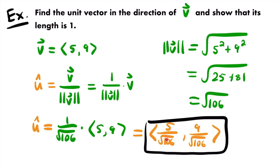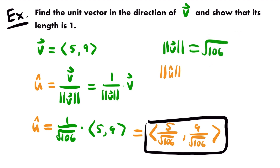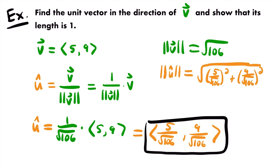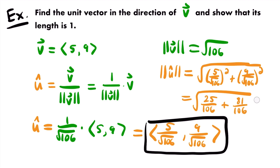We found the unit vector, but we also want to show that its length is 1, because a unit vector has a magnitude of 1. So let's test that out. Taking the magnitude of vector u, that will be equal to the square root of the sum of the components squared: 5 divided by the square root of 106, squared, plus 9 divided by the square root of 106, squared. Simplifying, that equals the square root of 25 divided by 106 plus 81 divided by 106. Because if we square each quantity, 5 squared is 25 and the square root of 106 squared just becomes 106.